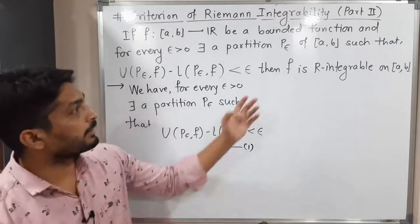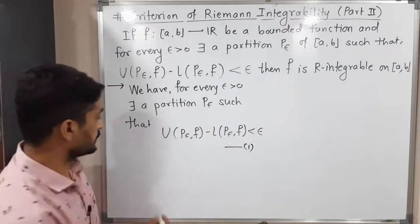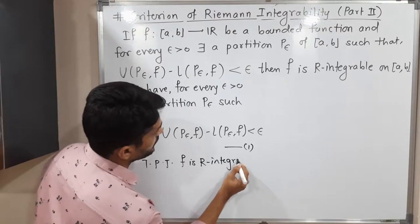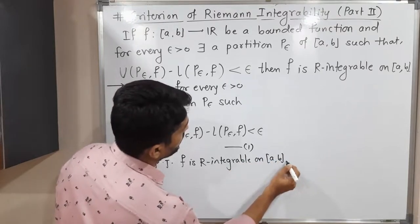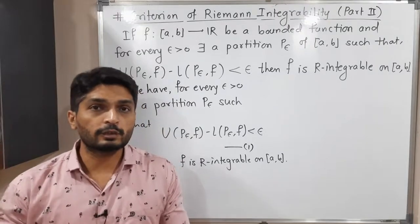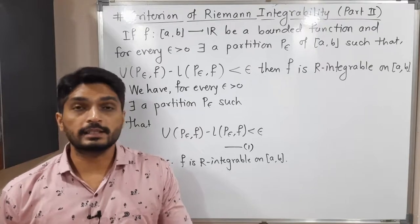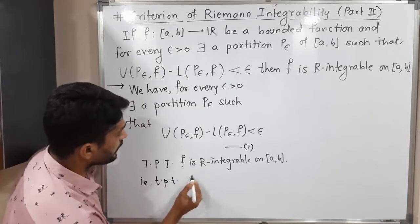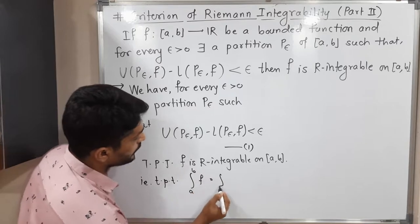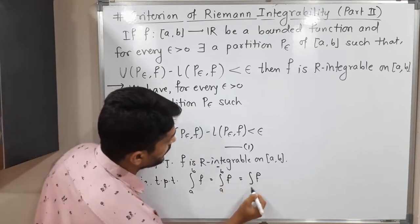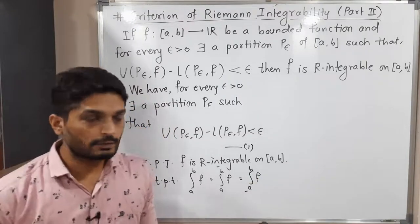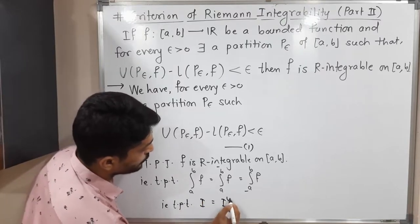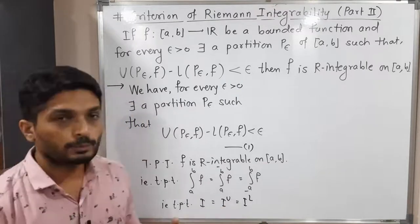What do we have to prove? We have to prove that the function is Riemann integrable on closed interval [A, B]. When we say a function is Riemann integrable, it means the upper integral equals the lower integral. So we have to prove that the upper integral equals the lower integral. For simplicity, I will use the symbols: I_U for upper integral and I_L for lower integral. So we have to prove I_U equals I_L.